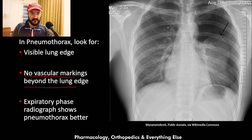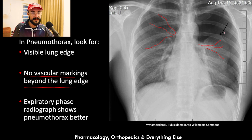In a normal lung, vessels spread from the hilum towards the lung lobes. In the pneumothorax lung, the vascular markings reach near the edge but do not extend beyond it. The area beyond the lung edge is very black — more radiolucent — because there is no lung tissue and no vascular markings there.